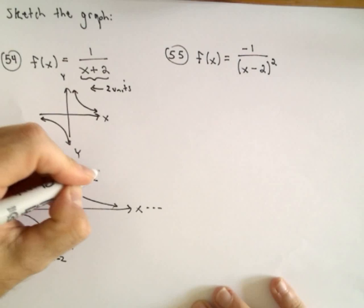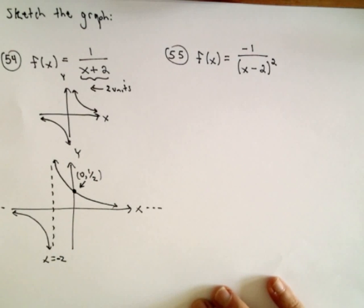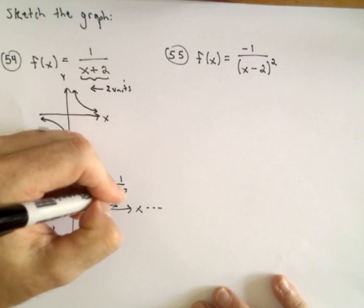So, there's the point 0 comma 1 half. And again, that's just a rough little sketch of 1 over x plus 2.